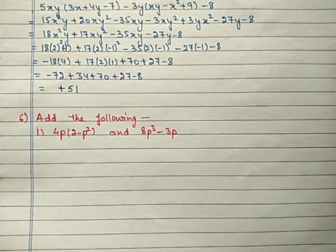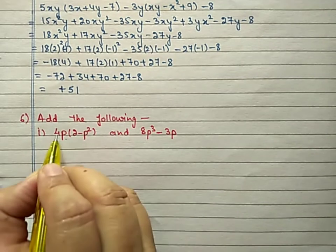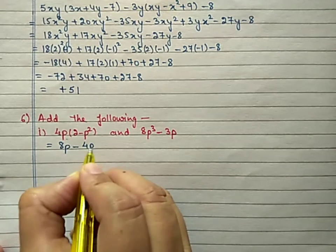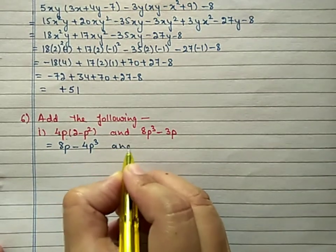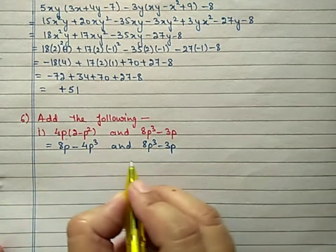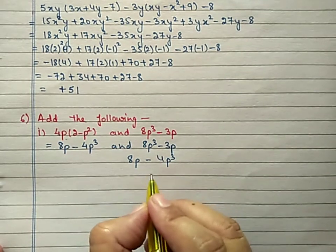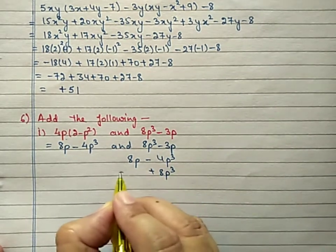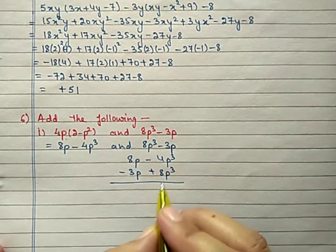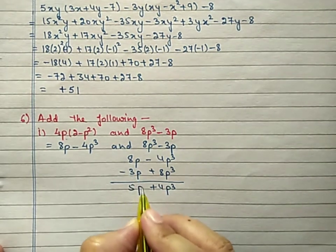Question number 6: Add the following. First we will multiply: 4 × 2 = 8p, then −4p³. This second expression is already multiplied so we write it as is. Now add: 8p − 4p³ plus 8p³ − 3p. Combining like terms: −4 + 8 = +4p³, and 8 − 3 = 5p. Answer: 4p³ + 5p.